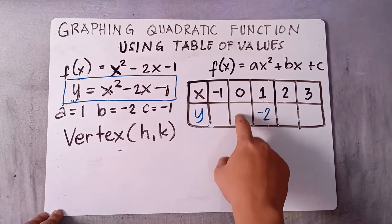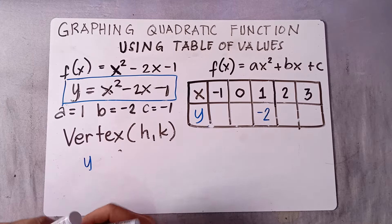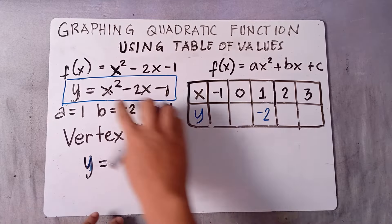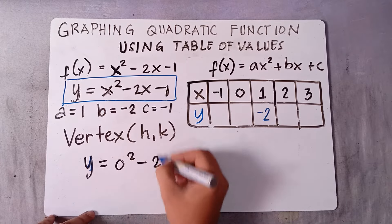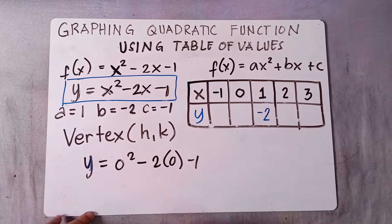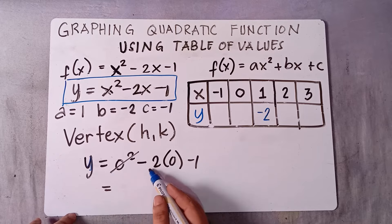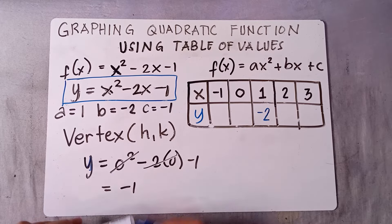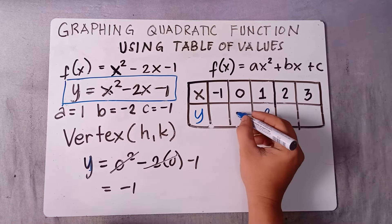Next, substitute x = 0: y = 0² - 2(0) - 1. Zero squared is 0, negative 2 times 0 is 0, so our answer is negative 1. If x is 0, our y is -1.